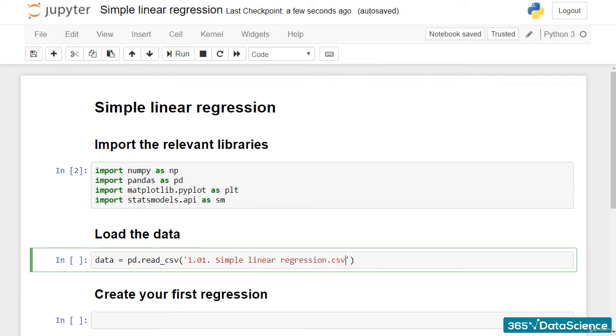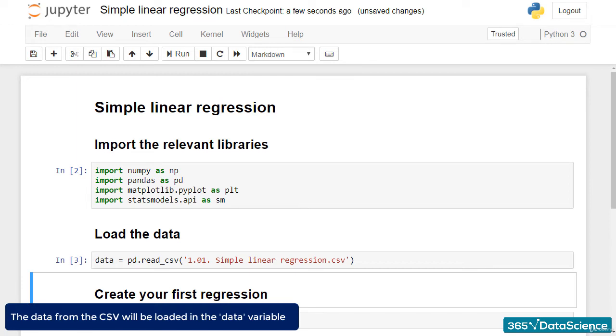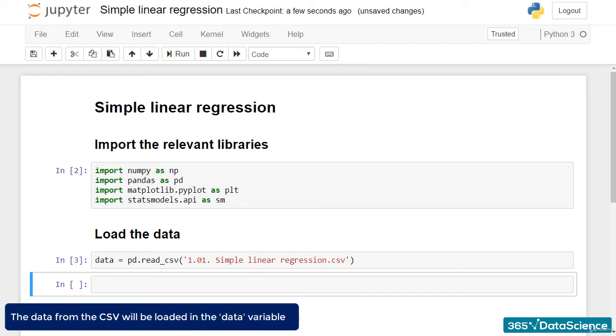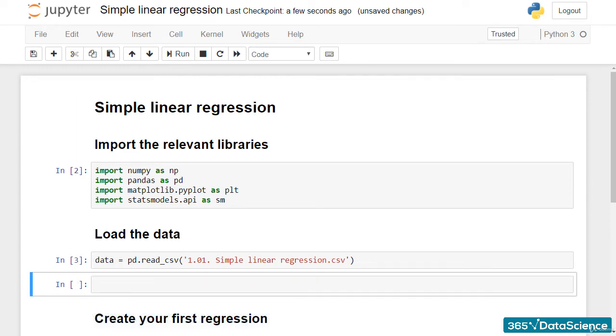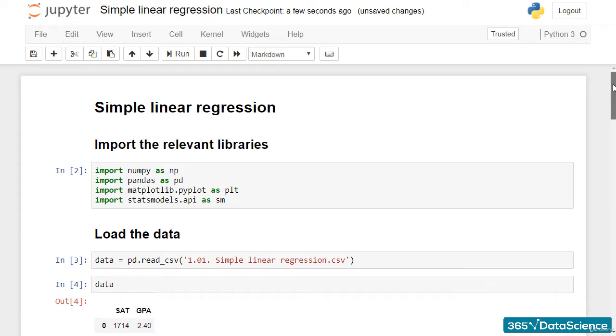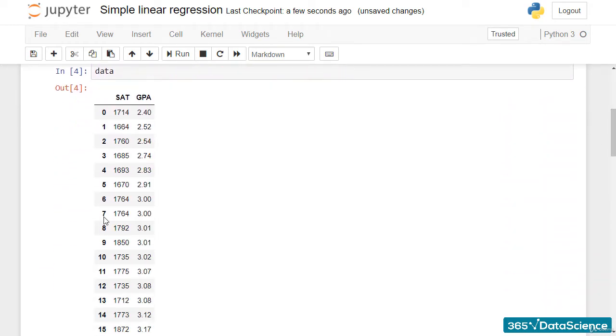After running this line of code, the data from the .csv will be loaded in the data variable. As I am using pandas, the data variable will be automatically converted into a data frame. Let's see if that's true. I'll write data and run the line. The result is clear. We have visualized the data frame.